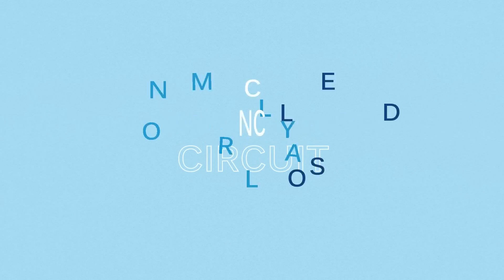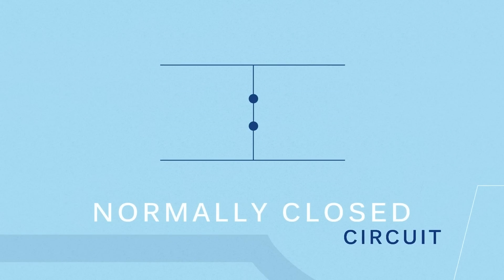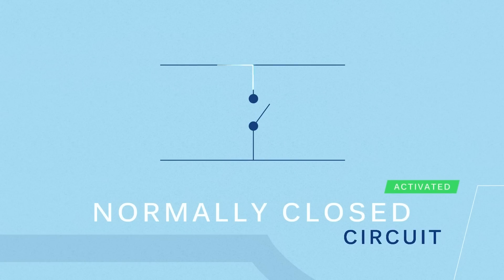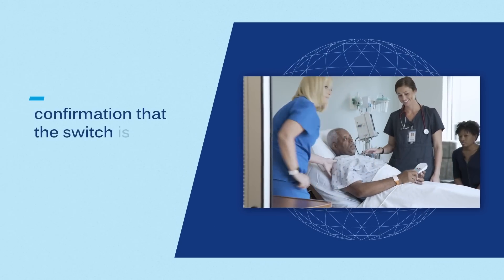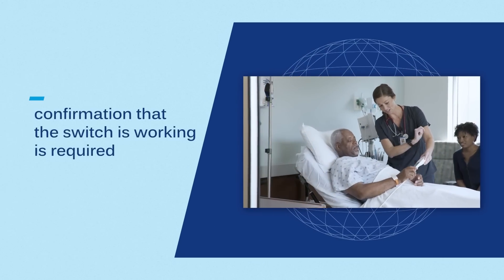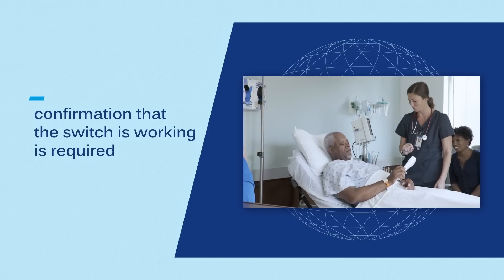Normally closed circuit. Normally closed function is the opposite — there is a constant current going through the switch when not activated. Once the switch is activated, the flow of current breaks. This function is excellent when constant confirmation that the switch is still working is required, for example in a nurse call system.